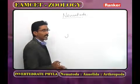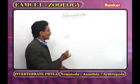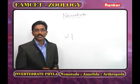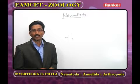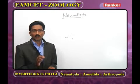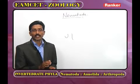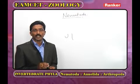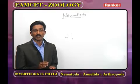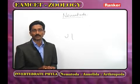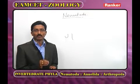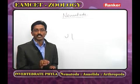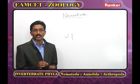In the male animal, the posterior end is pointed and curved, whereas in the female, the posterior end is pointed and straight. In the male animal, the cloaca, copulatory spicules, and copulatory papillae are present. Copulatory papillae bring sexual excitement during copulation. At the time of copulation, the male uses copulatory spicules to release sperms into the female body.